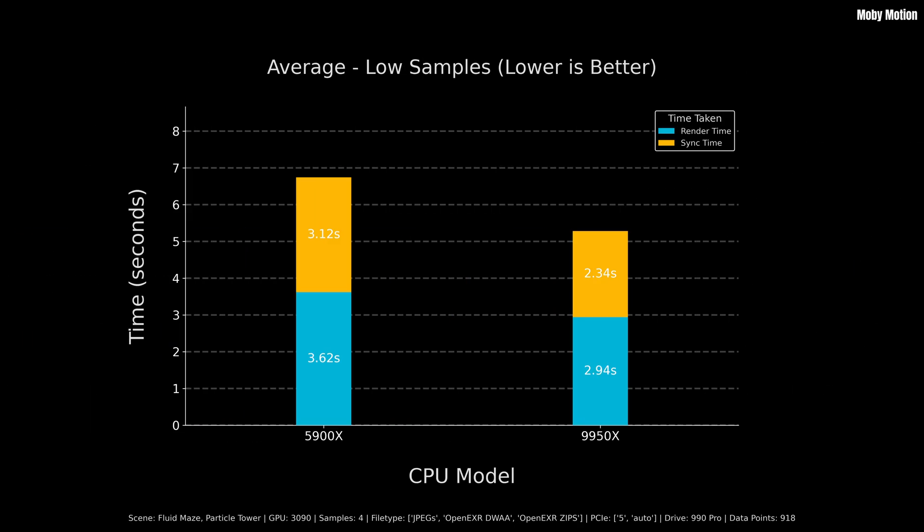This is the overall average for every experiment with a low sample count — both scenes and every file type — totaling 918 data points. The total time was 27.6% faster just because of a faster CPU. The cycles render time was 23.1% faster, and the sync time on average was 33.3% faster.